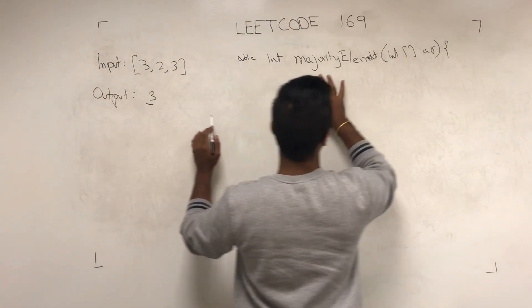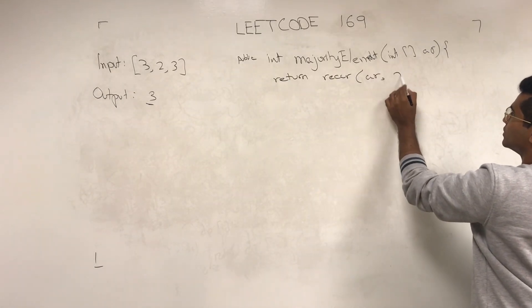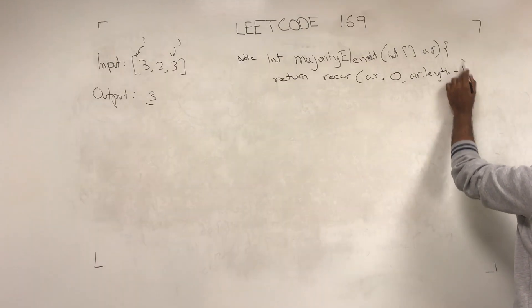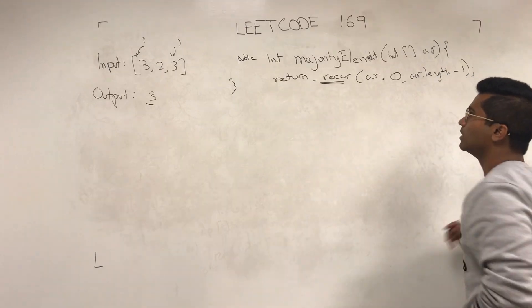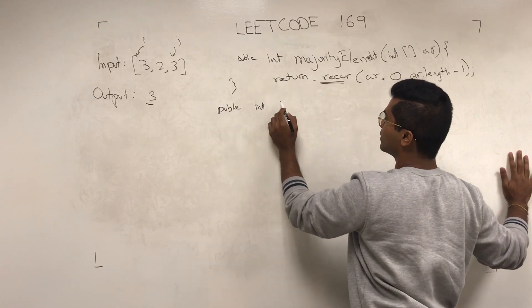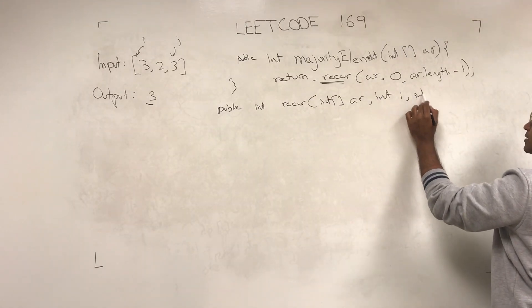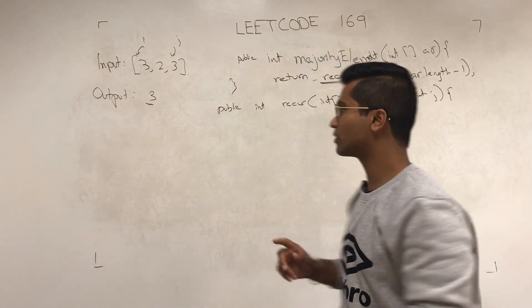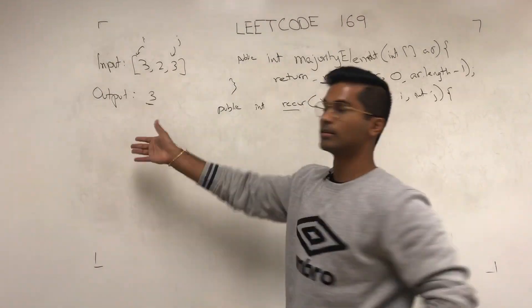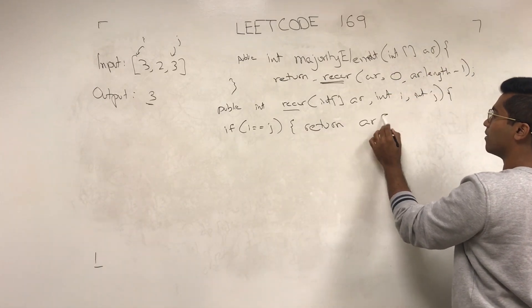Now we're going to return recursive AR, zero, which means there's going to be an i pointer there and a j pointer there which is AR dot length minus one. So let's look at the base case: public int recur int array i int j. So with recursion let's always talk about the base case first. If i and j are the same, for example if there's only one element, i and j are going to be the same and we're going to return what's in there. So if i is equal to j, return AR of i.